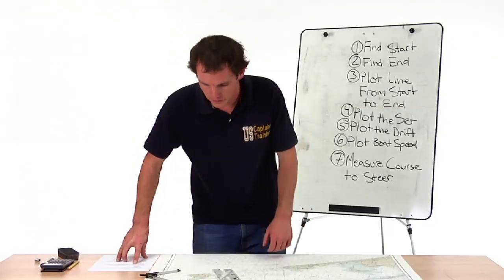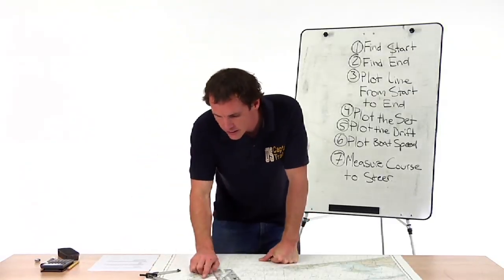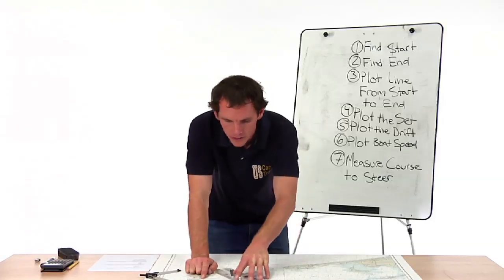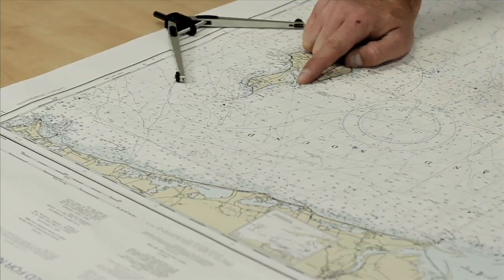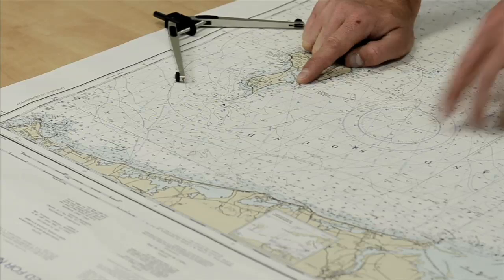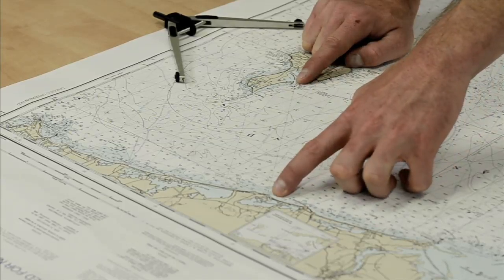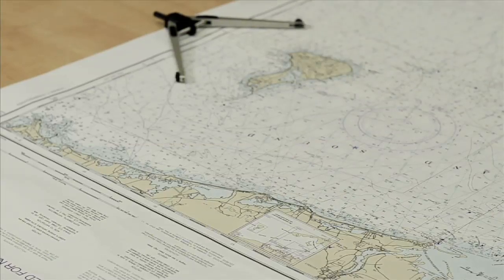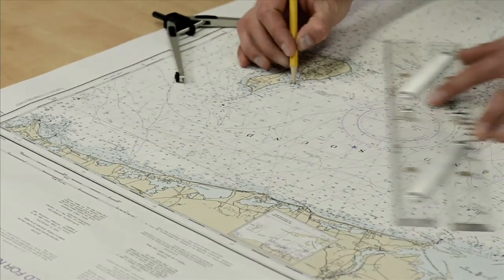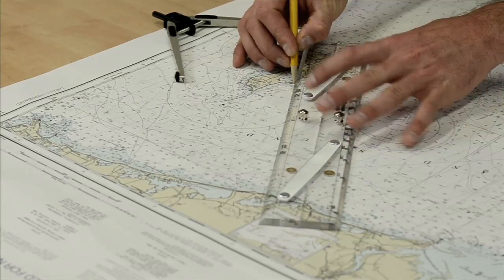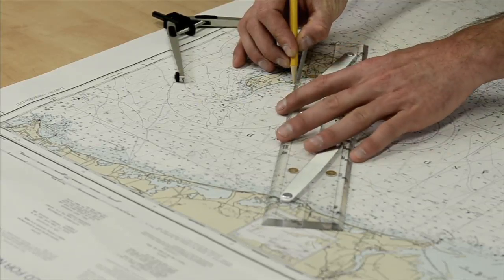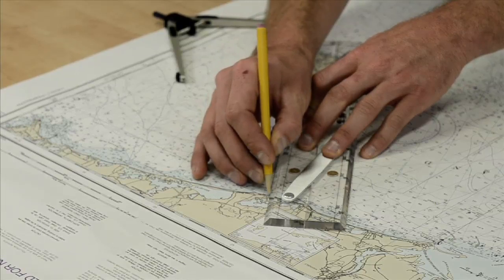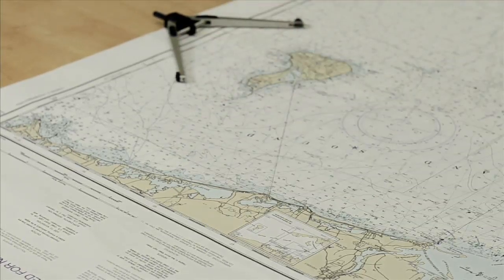We find the starting point — the entrance to Great Salt Pond. Here's where we start. Quono Pond — here's the entrance to Quono Pond. We draw a line connecting these two. So this is the course that we're trying to steer.